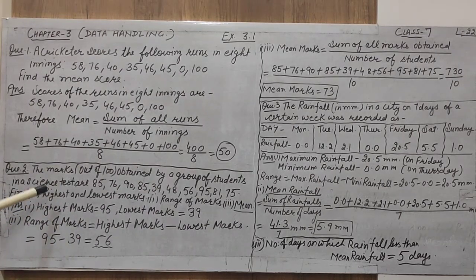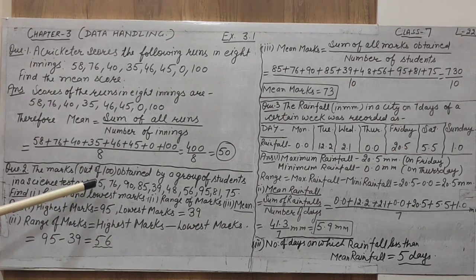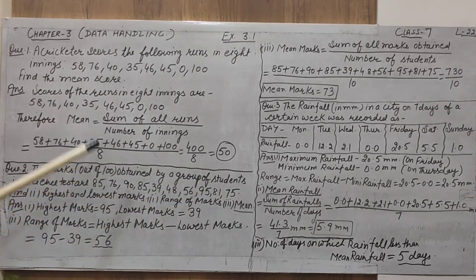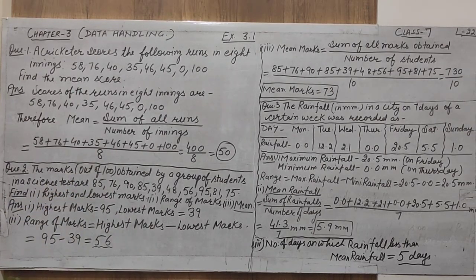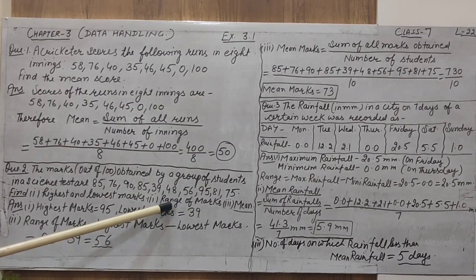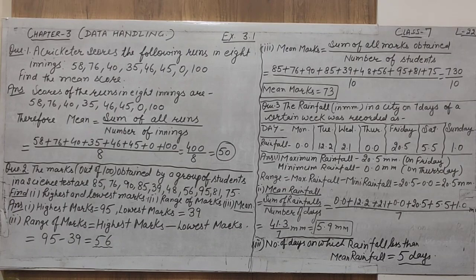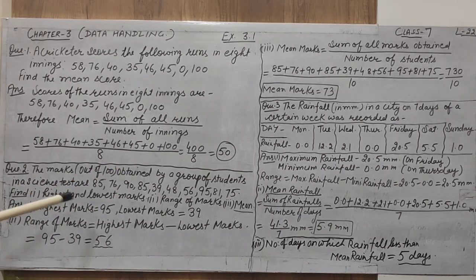From these observations we have to find: first, the highest and lowest marks. The first answer is the highest marks. Observing the data: 85, 76 — which number is highest? When 90 comes, 90 is greater than 85 and 76. Then we observe if any marks are more than 90. We find 95. So the highest marks are 95.